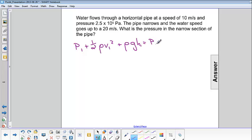We're going to have p2 plus 1 half rho v2 squared plus rho g h2. Now the height is not changing, so h1 and h2 are equal to each other, so we can get rid of that part of the equation.